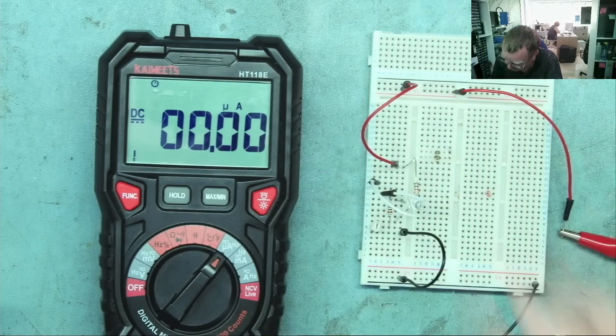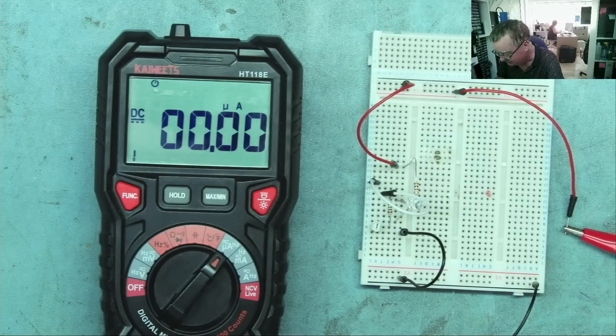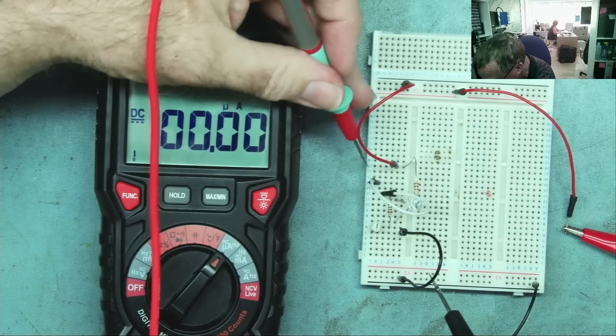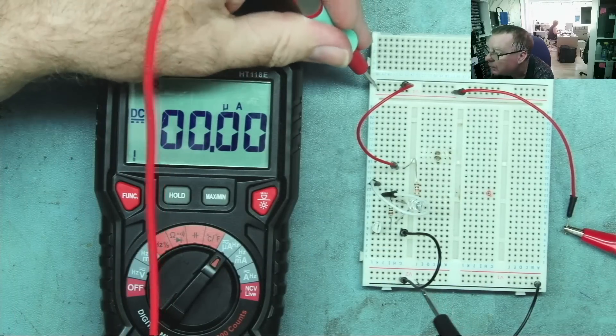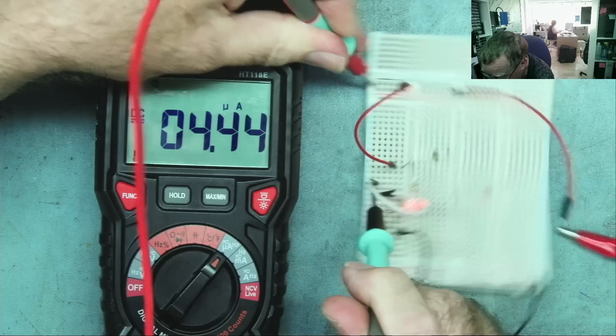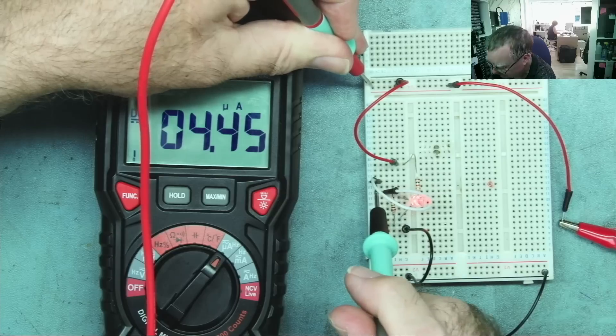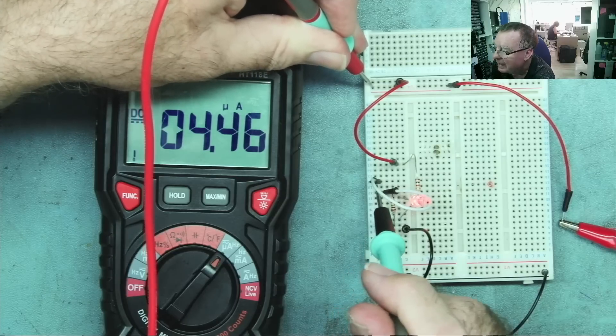So I'll just put the white wire in there. And I can now connect my multimeter easily. So from power coming in to the white wire. And we have about 4 microamps. But even that is enough to light the LED brightly.